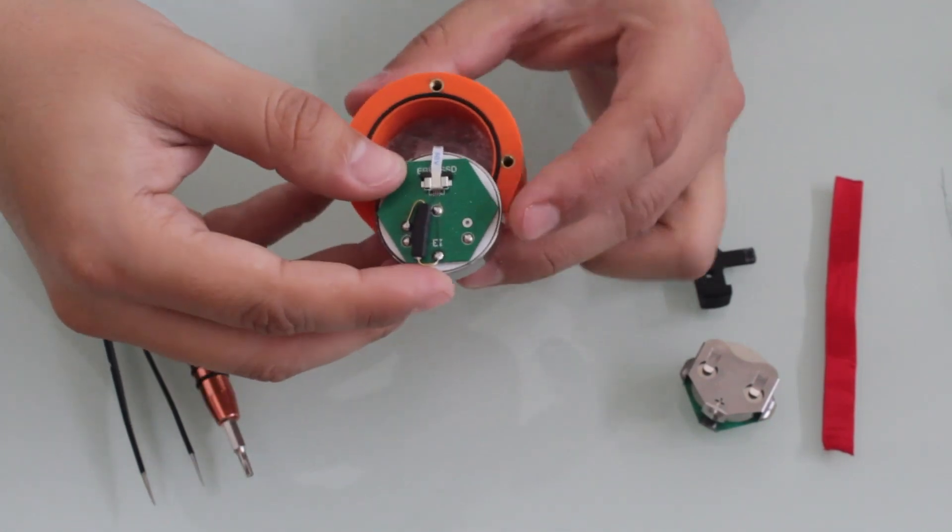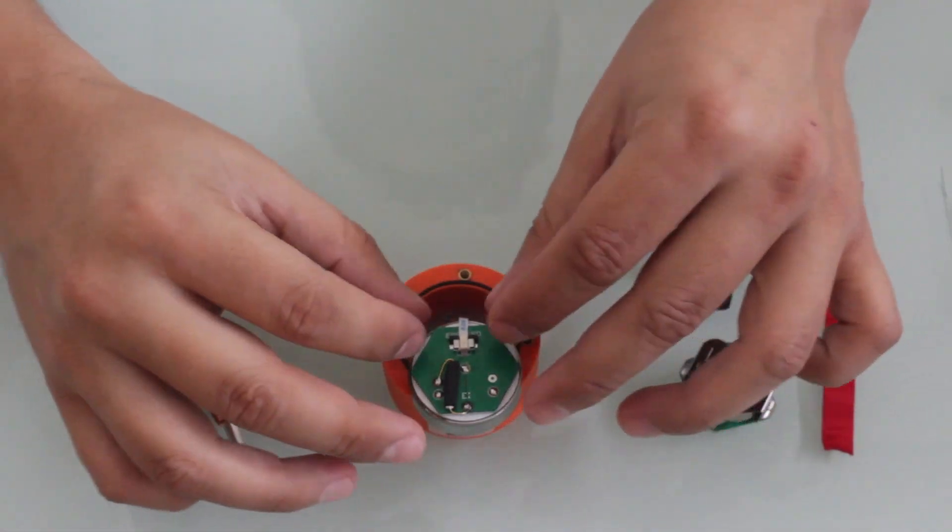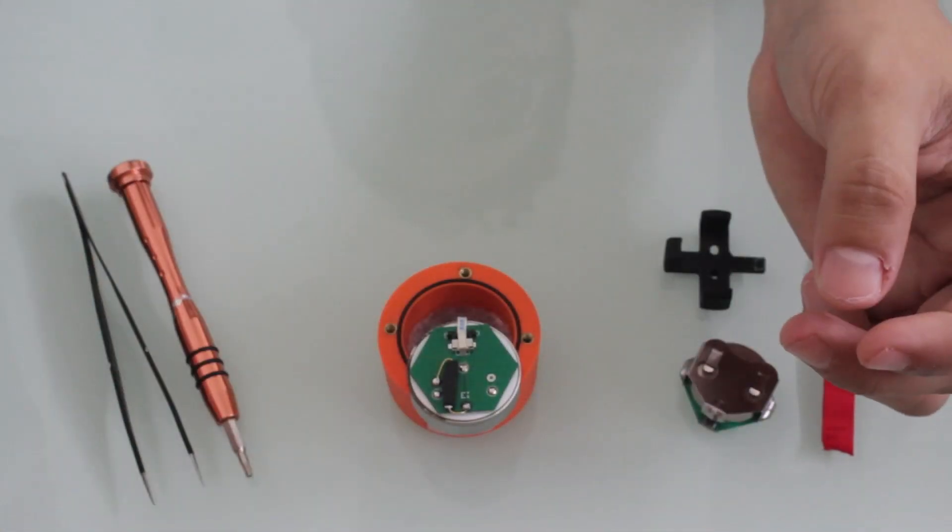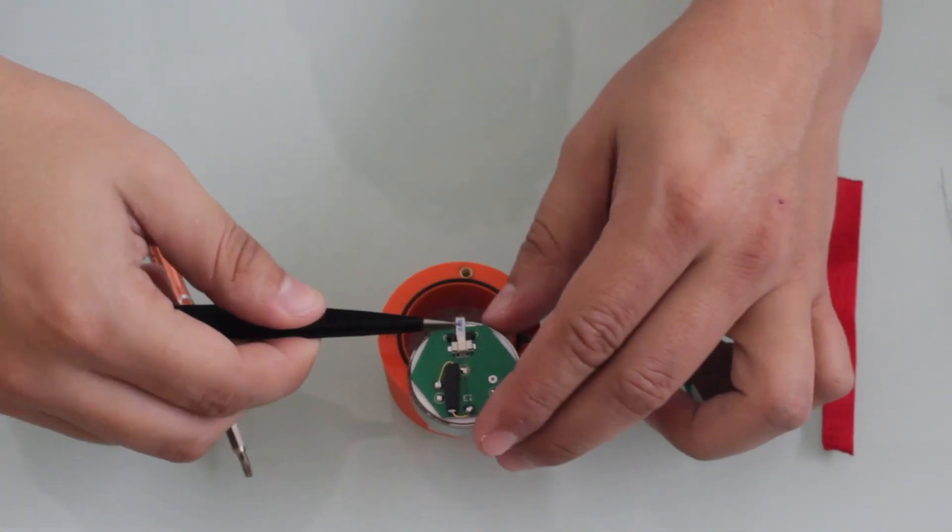Then use both hands to remove the lock that holds the flat cable. And then use the tweezers to carefully remove the cable.